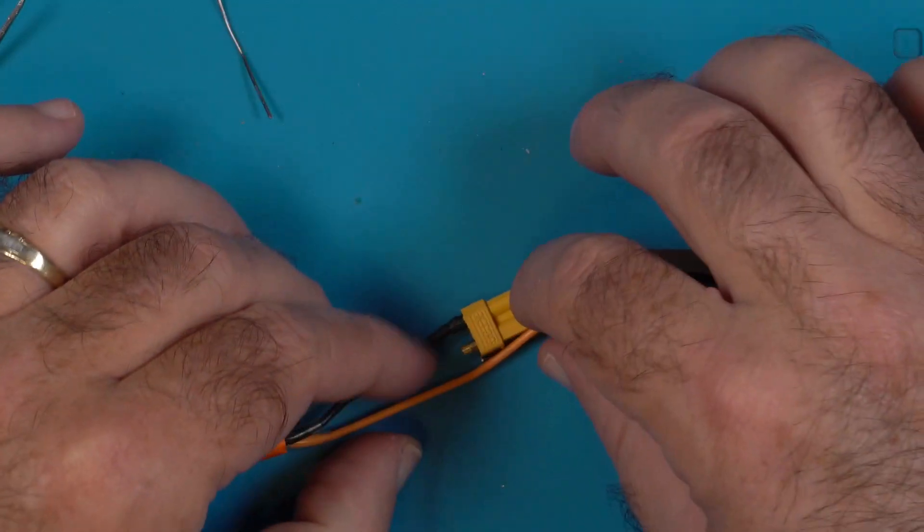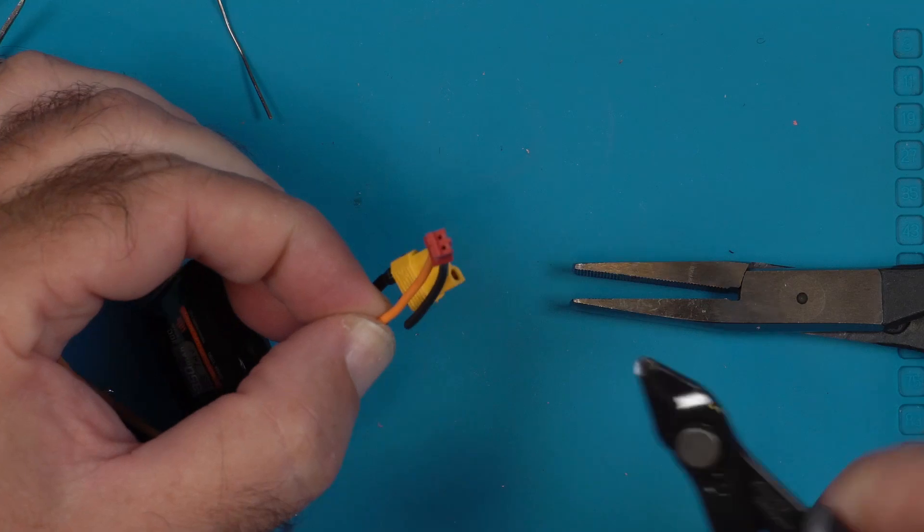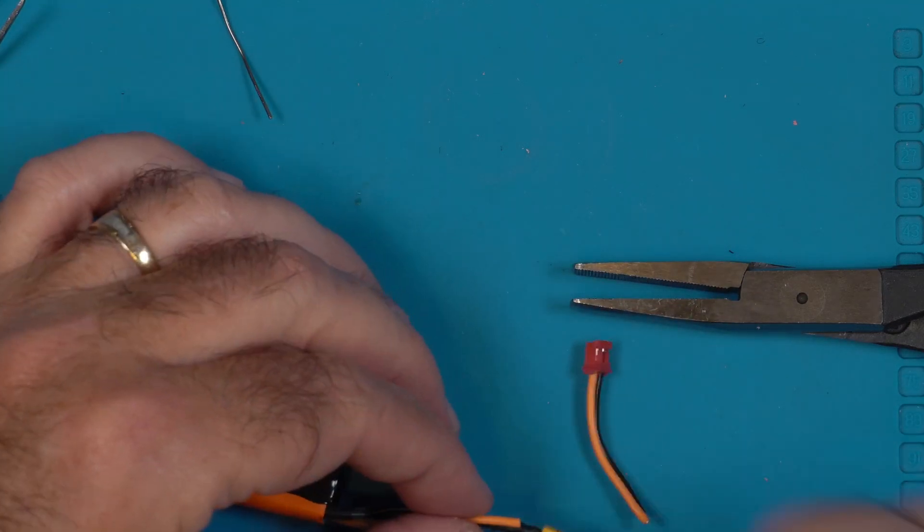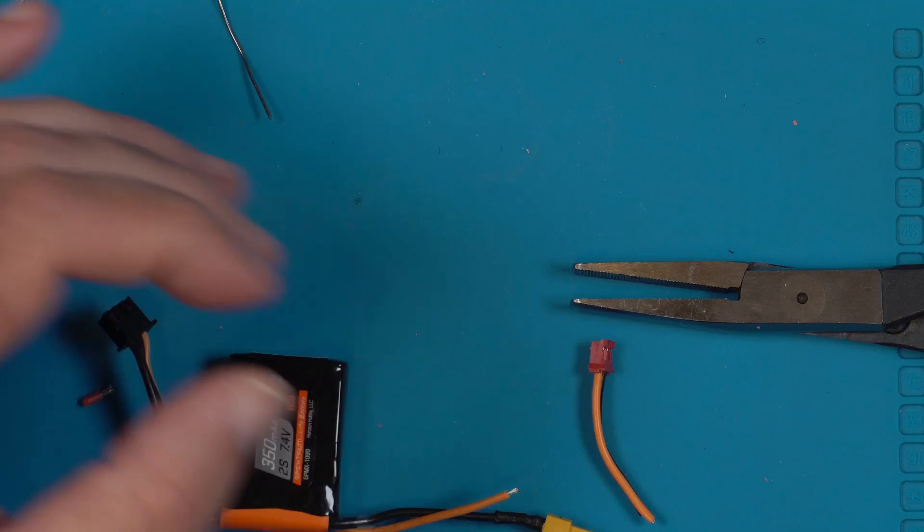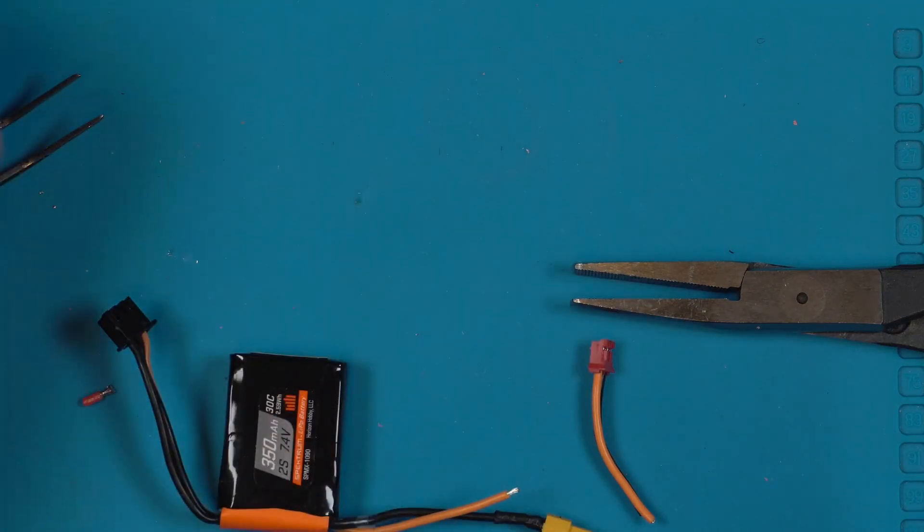The other side gets cut right about there. Tin that wire. Tin that wire. But first, put on the shrink tube.